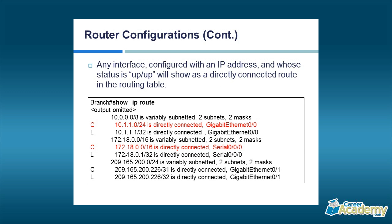After running show IP interface brief to see which interfaces have configured IP addresses and are up, when we do show IP route we begin to see two entries for each interface. One is the very specific address assigned to the interface; the other is the network it's attached to. The routing table shows the actual subnet mask assigned to the interface. The /32 — which you didn't type — is what the routing table assigns to a directly connected interface's local IP address, based on the concept of longest match for route lookups.